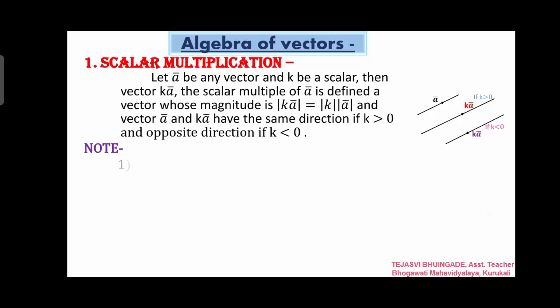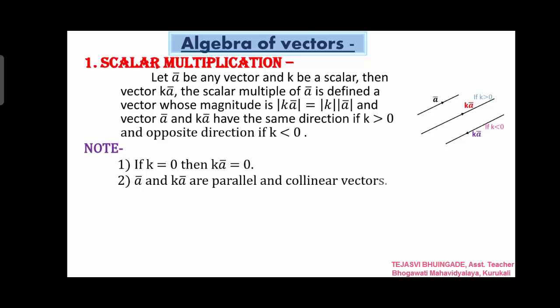First note: if k is equal to 0, then kā is equal to zero vector. If we consider scalar 0, obviously 0 times vector gives zero vector. The answer is 0. If the value is 0, then kā is obviously zero vector. We consider non-zero scalar. Second note: ā and kā are parallel and collinear vectors.